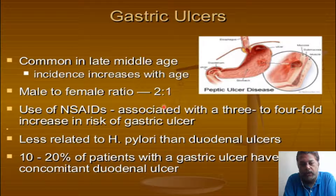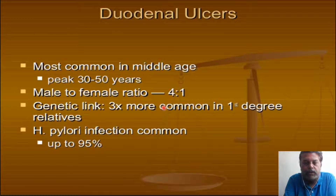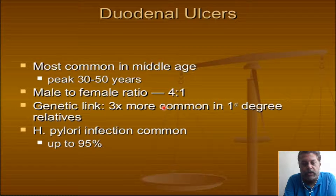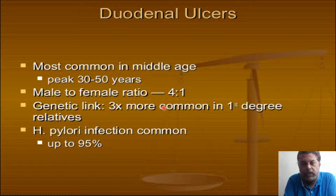In 10 to 20 percent of patients, the patient may have both gastric and duodenal ulcer. Duodenal ulcers are more common in middle age groups with more male predominance. They have got genetic links also, and 95 percent are H. pylori positive. Duodenal ulcers are less common to turn into malignancy but are more common for surgical obstructive lesions in the duodenal area.